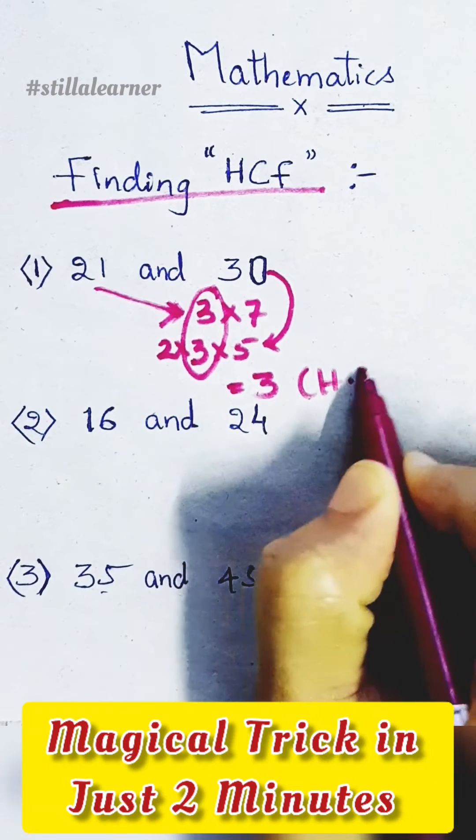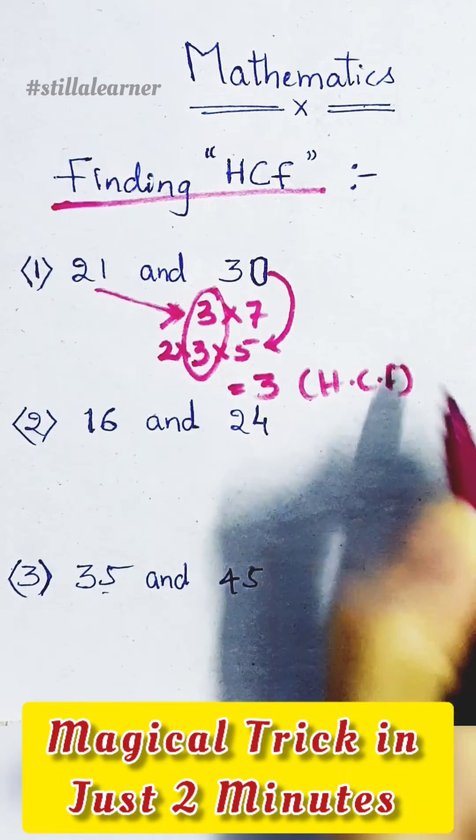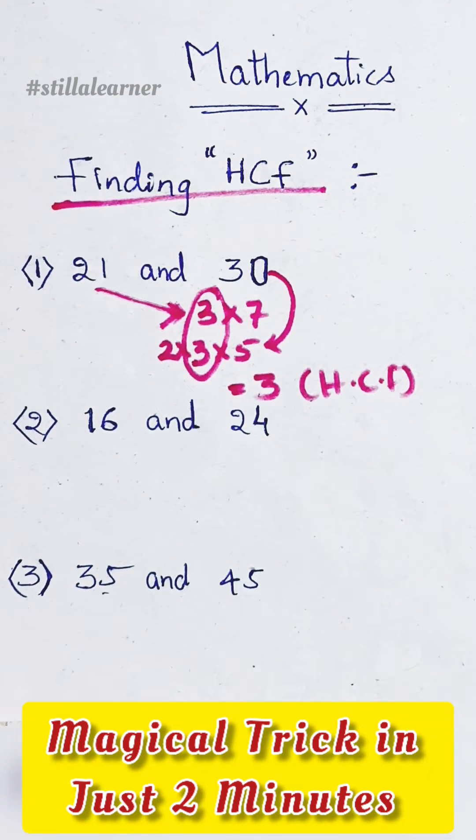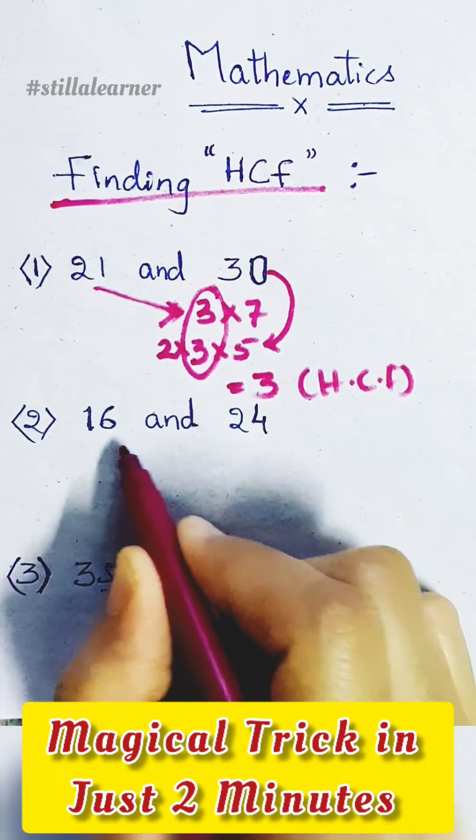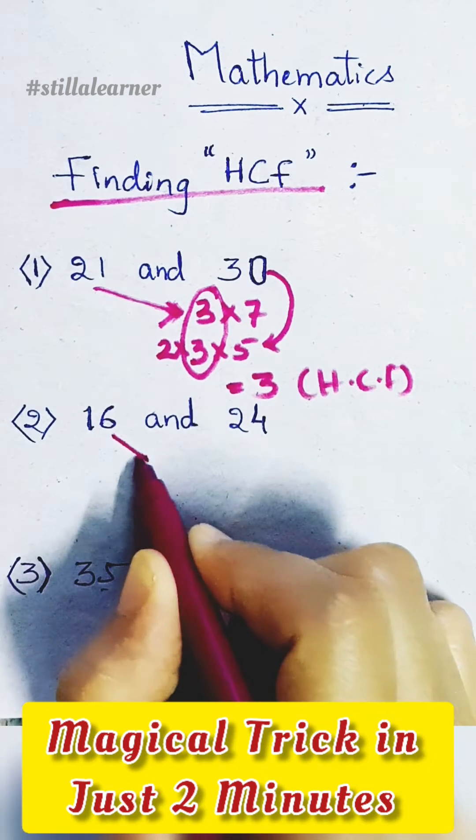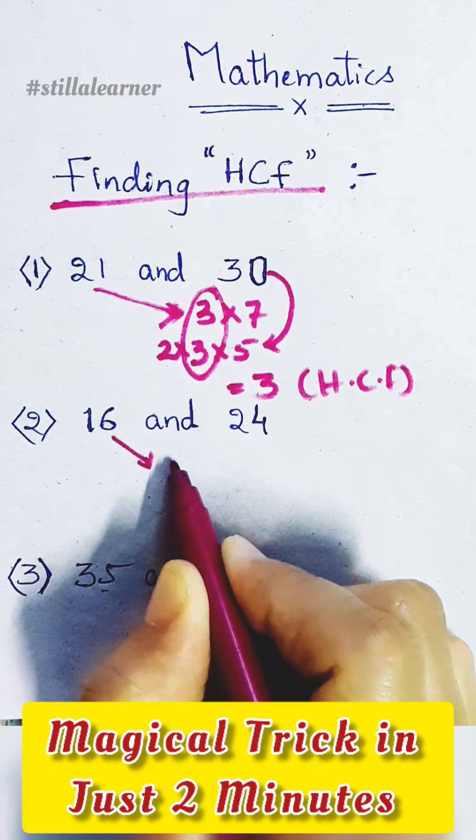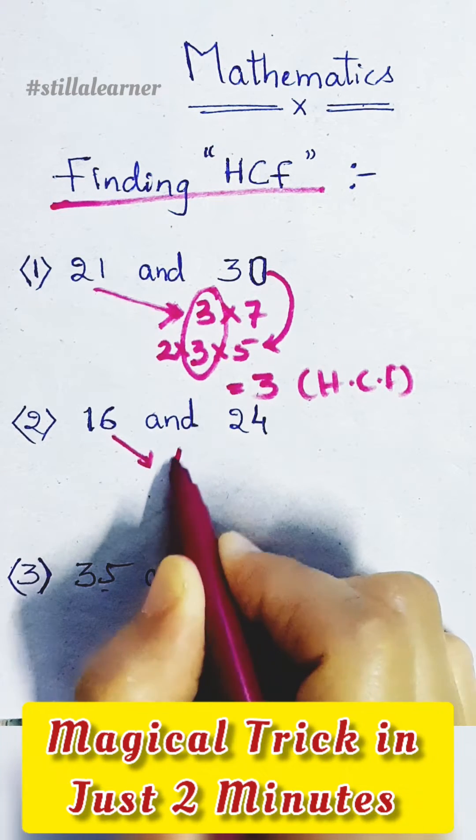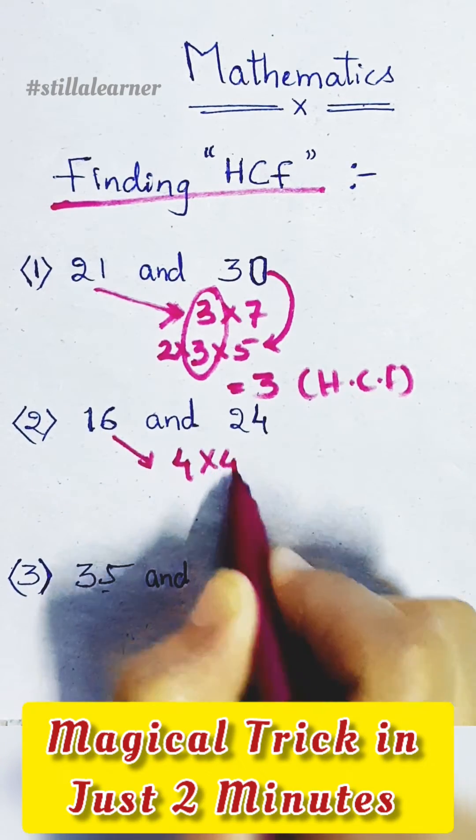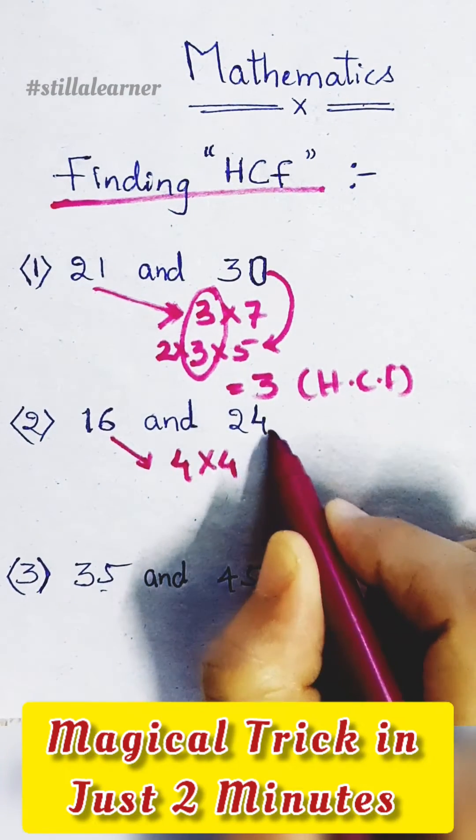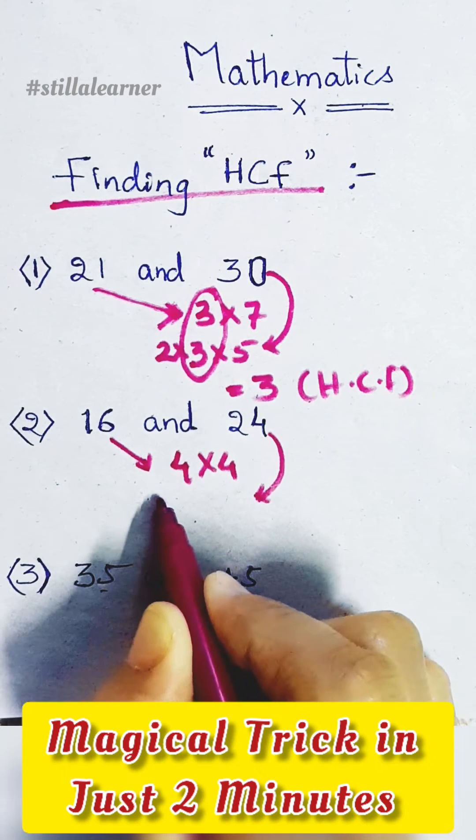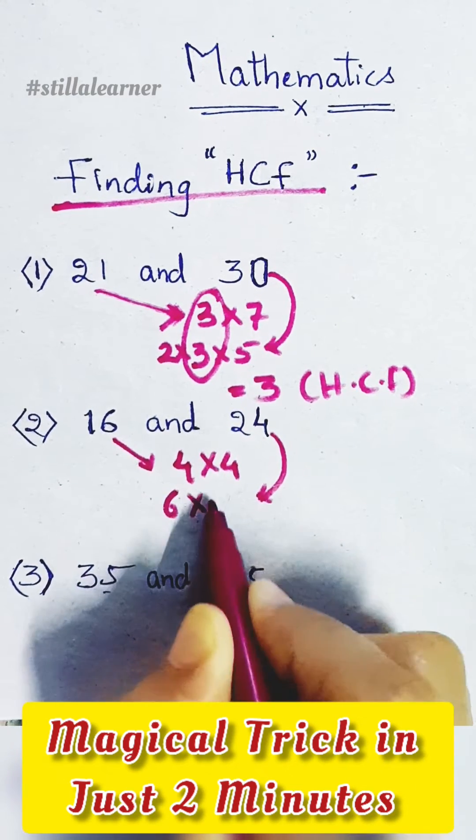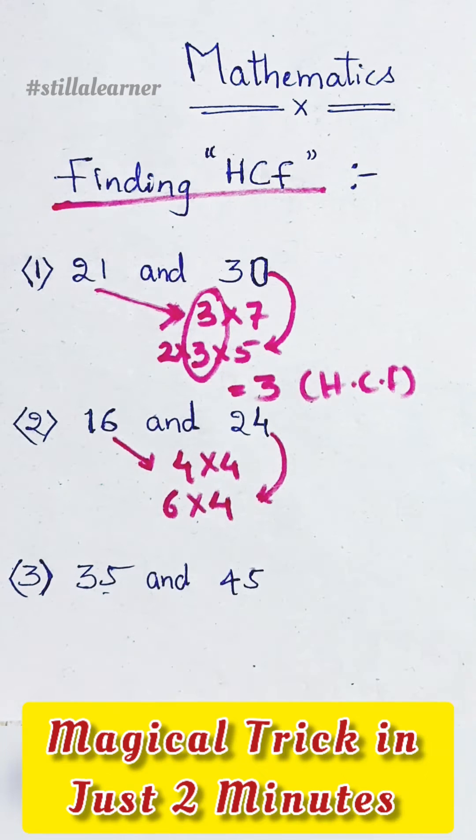Likewise, we have to go for the second one also. Here the numbers are 16 and 24. First we find the factors of 16, that is 4 times 4 equals 16. And the factors of 24 are 6 times 4 equals 24, or 4 times 6 equals 24. Here you may think that 4 is the common factor, but actually it's not.